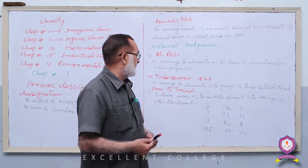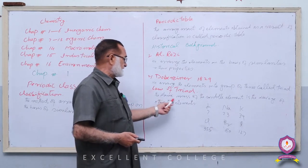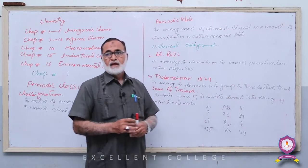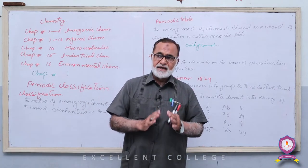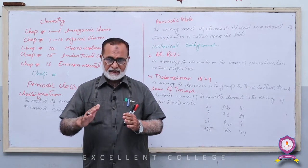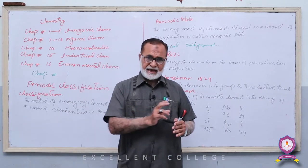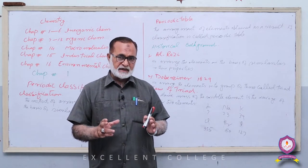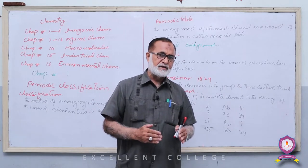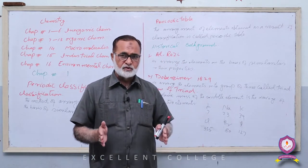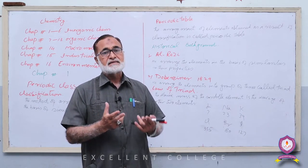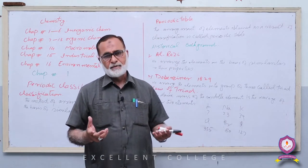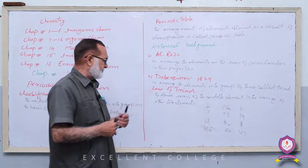Law of Triads کیا ہے؟ The atomic mass of the middle element is the average of the other two۔ یعنی اگر increasing atomic mass کی بنیاد پر تین elements کا group بنائیں جس میں middle element کا atomic mass باقی دونوں کا average ہو، تو ایسے تین elements کے set کو Triad کہیں گے۔ And they will show similar properties۔